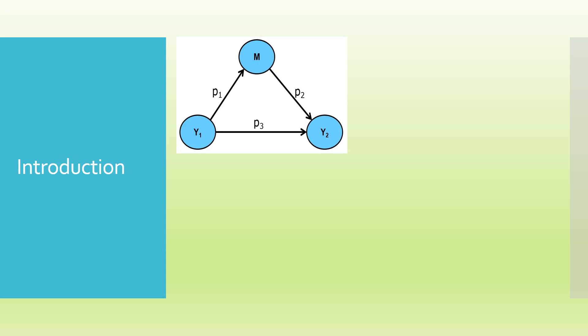Here in this model you can see there are three constructs: y1 affecting y2, and y1 affecting y2 through the mediator variable m. The layman example is that y1 is a child who wants to go on a picnic. The child can approach the father directly — that is y2 — and p3 is a direct effect. But if the child feels that approaching the father directly may not influence him, the child takes the route of the mediating variable, the mother. The child tries to convince the mother, and the mother will try to convince the father. So the route taken is an indirect effect: p1 into p2. P3 is a direct effect; p1 into p2 is an indirect effect.